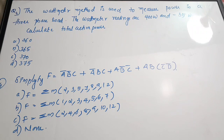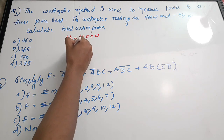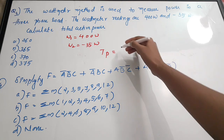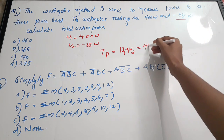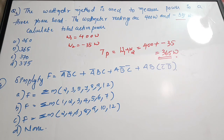The third question: the wattmeter method is used to measure power in a three-phase load. The wattmeter readings are 400 watts and −35 watts. Calculate the total active power. Total active power Tp = W1 + W2 = 400 + (−35) = 365 watts. These topics are included in the Electronic Instrumentation subject. The correct answer is option B, 365 watts.